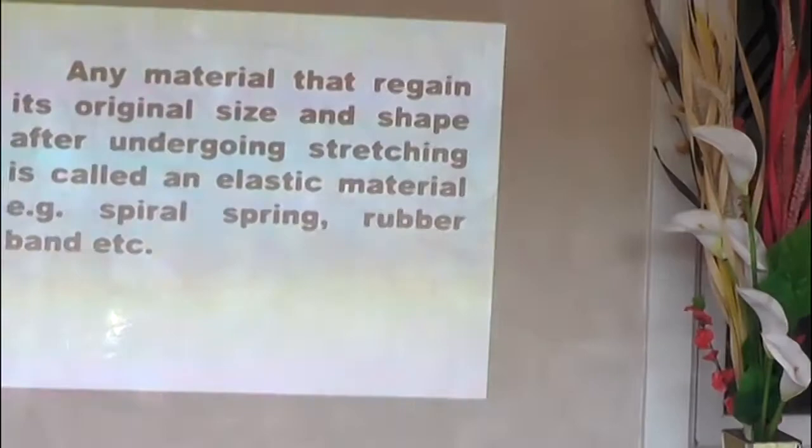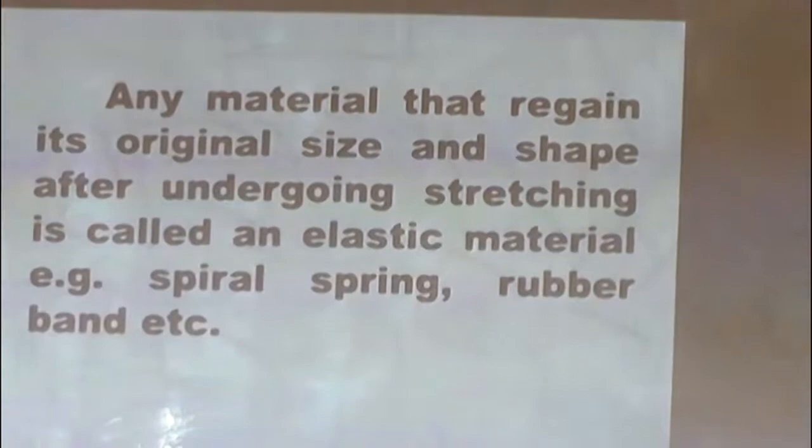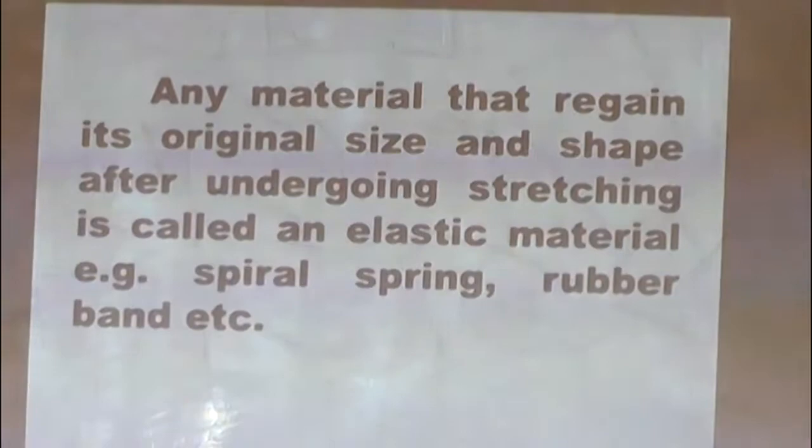Any material that will retain its original size and shape after deformation is called an elastic material. Examples include spiral spring and rubber band — we have so many such materials.